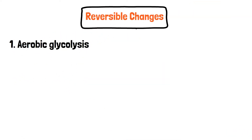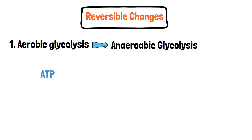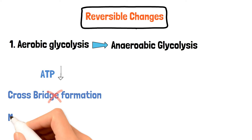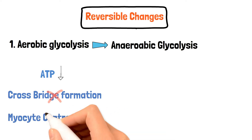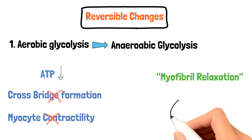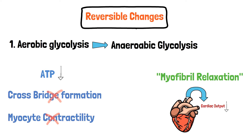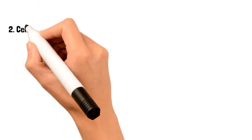An ischemic myocyte switches from aerobic glycolysis into anaerobic glycolysis. Without ATP being produced, cross-bridge formation is stopped within seconds and the myocyte loses its contractility — we call this myofibril relaxation. If this happens to enough cardiac myocytes, then a whole portion of the ventricle would not work, resulting in a lower cardiac output.